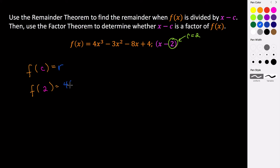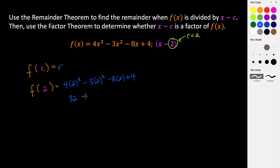So we have 4 times 2 cubed minus 3 times 2 squared minus 8 times 2 plus 4. So all of this is going to simplify — 2 cubed is 8, so 4 times 8 that's 32. Then 3 times 4 is 12, so that's negative 12. And 8 times 2 is 16, so minus 16, plus 4.